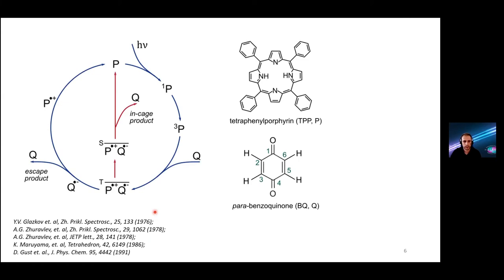We considered different CIDNP reactions and in the end we decided to stay with this really well-known model reaction between porphyrin and benzoquinone. By exciting, by irradiating with green light, there is a certain cyclic chemical reaction which results in strong hyperpolarization of benzoquinone.